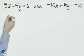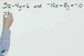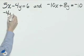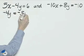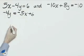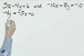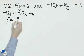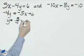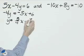Solve each one of them for y. This is going to be negative 4y equals negative 5x plus 6. Divide everything by negative 4. That's y equals positive 5-fourths x minus 6 divided by 4, which is 3 halves.